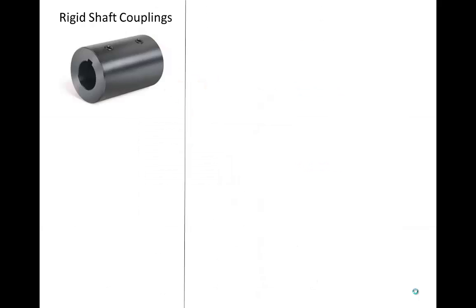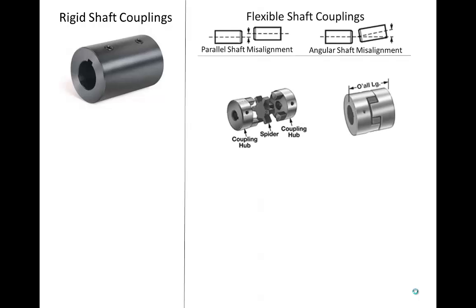I showed several types of shaft couplings in a previous video. This is a rigid coupling, which is low cost but requires that the shafts be closely aligned with each other. In most cases, however, it is difficult to make sure that the shafts are aligned. Misalignment can be parallel misalignment or angular misalignment, and there are many types of shaft couplings that can handle various magnitudes of misalignment.